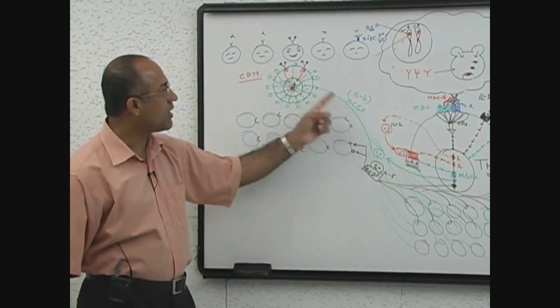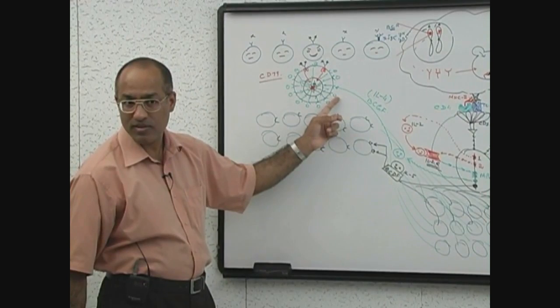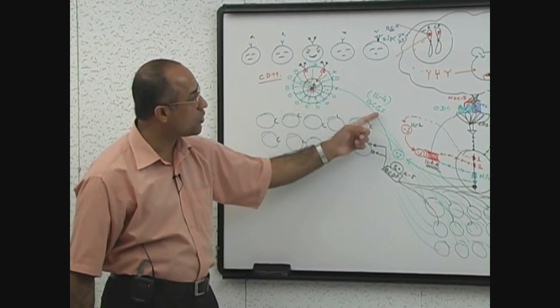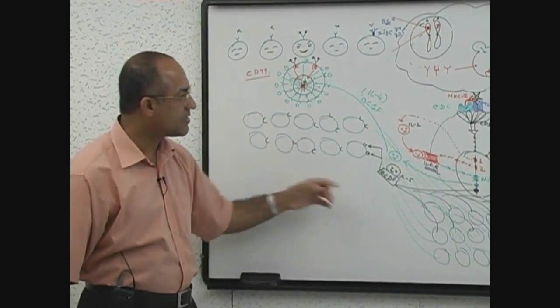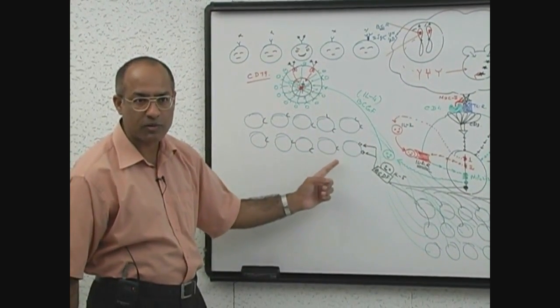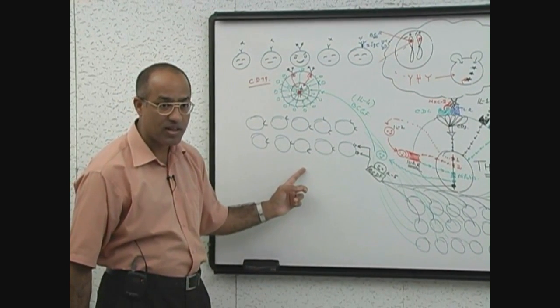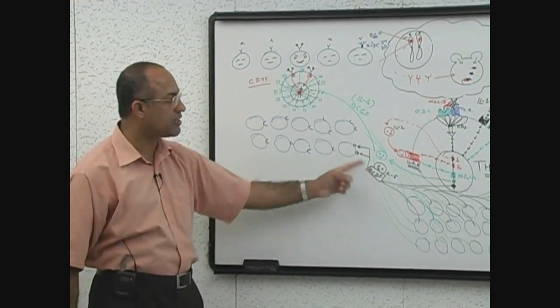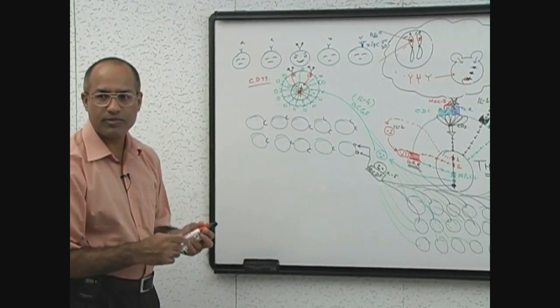So T helper 2 cells are producing interleukin-4 as well as interleukin-5. Interleukin-4 leads to proliferation of selected B cell, so interleukin-4 is B cell growth factor. Once B cells have enough proliferated, then interleukin-5 is being produced and interleukin-5 receptors are expressed by the clonally expanded B cells. And when B cells are stimulated by interleukin-5, all the B cells are stimulated by interleukin-5, they undergo differentiation.